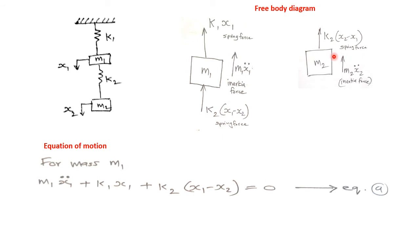For the second mass M2, the spring force acting on it is from spring K2. The deflection of spring K2 with respect to mass M2 is X2 minus X1, because spring K2 is stretched by mass M2 and compressed by mass M1. So the net deflection of spring K2 is X2 − X1, and the spring force on M2 is K2·(X2 − X1).